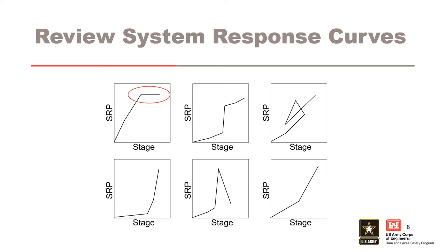In the example at the top left, the system response probability or SRP remains constant with increasing stage. For example, it could reach an SRP of one, or tailwater rises, reducing gradients such that the SRP can no longer rise. In the example at the bottom left, it's a brittle system — a threshold stage where performance changes dramatically. Are sufficient points defined over small but critical ranges of stages?